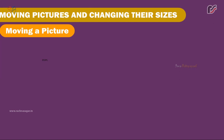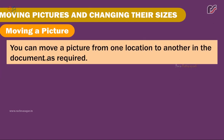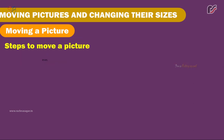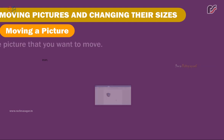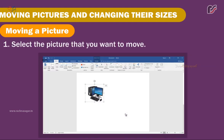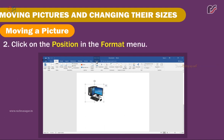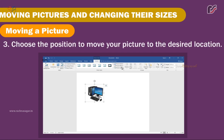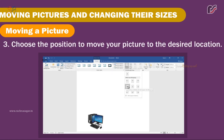Moving a Picture. You can move a picture from one location to another in the document as required. Steps to move a picture: 1. Select the picture that you want to move. 2. Click on the Position option in the Format menu. 3. Choose the position to move your picture to the desired location.